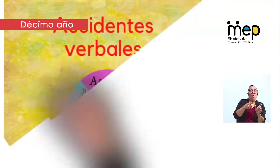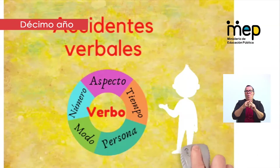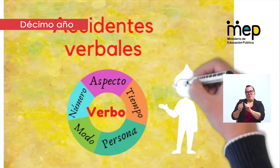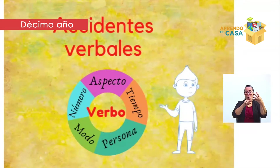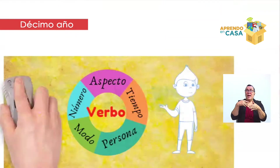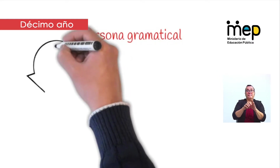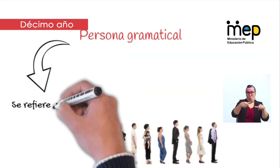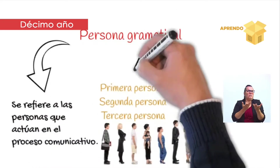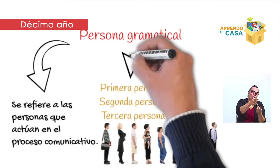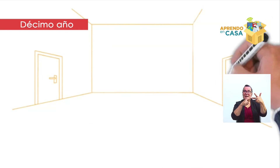Como se dijo al inicio, el verbo es variable. Estas variaciones se llaman accidentes verbales: tenemos aspecto, tiempo, número, modo y persona. Durante este repaso hablaremos de los elementos vistos durante la secundaria. Por ejemplo, la persona gramatical. Estamos en un hecho comunicativo donde las personas se refieren a sí mismas o a otros. Estas personas gramaticales son la primera, la segunda y la tercera persona gramatical.